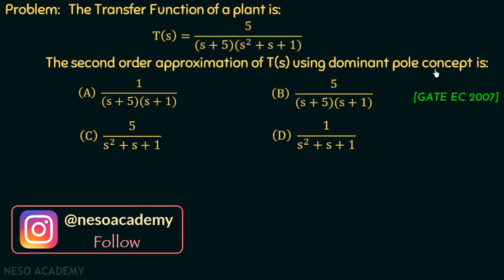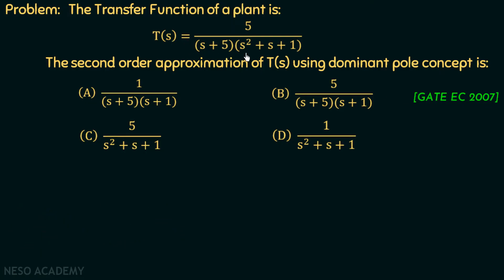The second-order approximation of T(s) using the dominant pole concept is a multiple choice question that was asked in GATE 2007. The transfer function given is a third-order transfer function because the highest power of s in the denominator will be equal to 3, so it will have three poles. One pole will be present at s = -5.